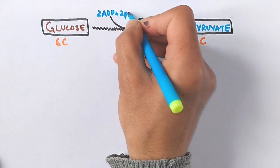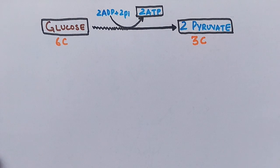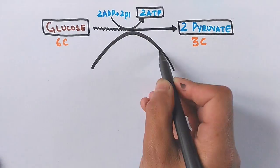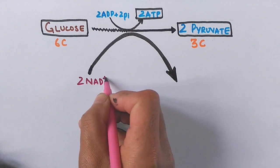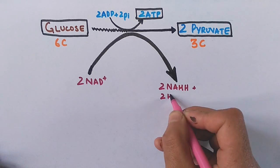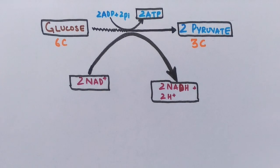During glycolysis, two ADP molecules combine with two inorganic phosphates to give two ATP molecules. Also in this process, NAD⁺ (nicotinamide adenine dinucleotide) gets reduced to NADH, because NAD⁺ gains electrons here. So we get two NADH molecules and also two protons.